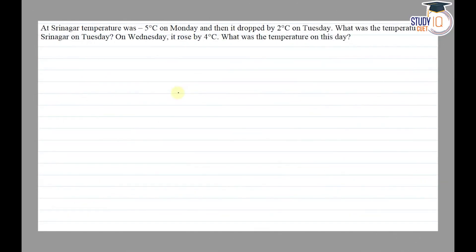Hello everyone. This question appears in Class 7 NCERT chapter of integers. This is the third question of Exercise 1.1. The question says that at Srinagar, temperature was minus 5 degree centigrade on Monday, and then it dropped by 2 degree centigrade on Tuesday. What was the temperature of Srinagar on Tuesday?